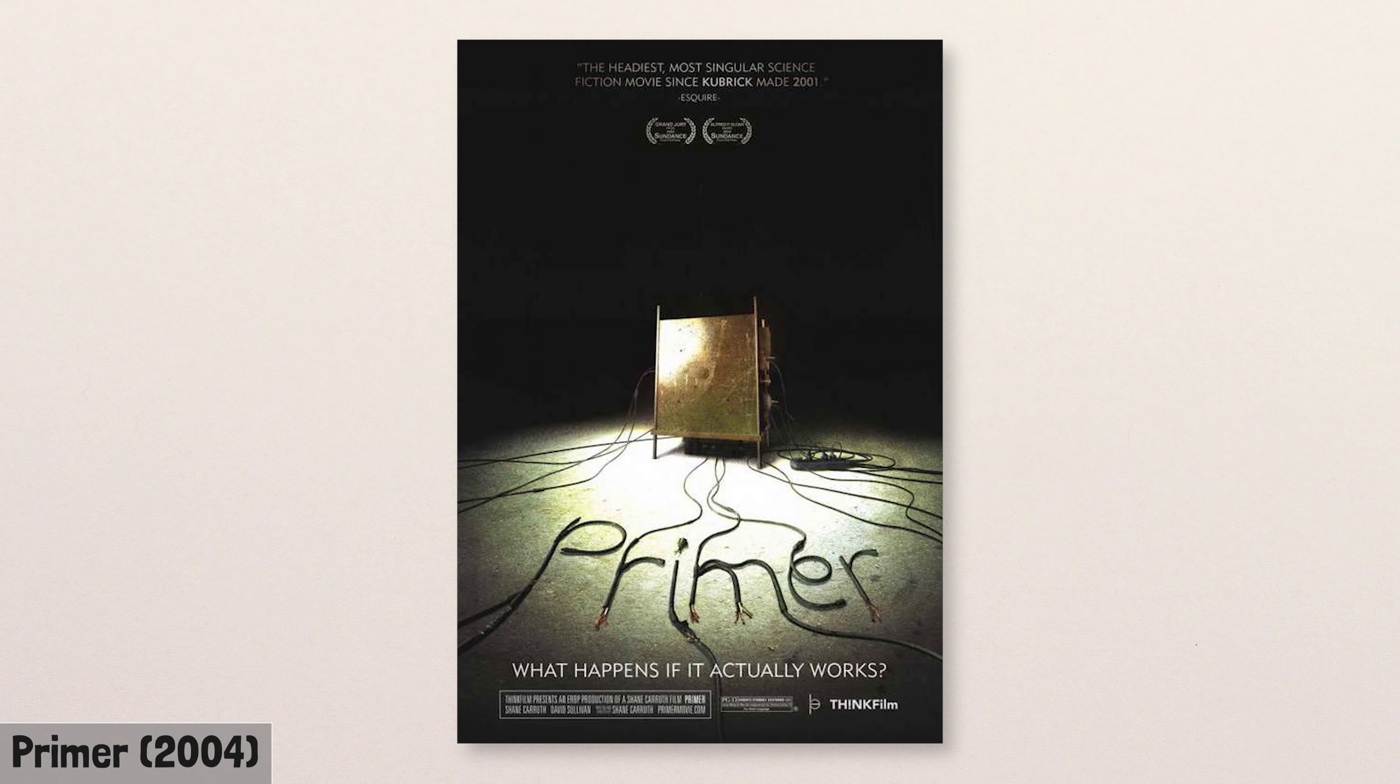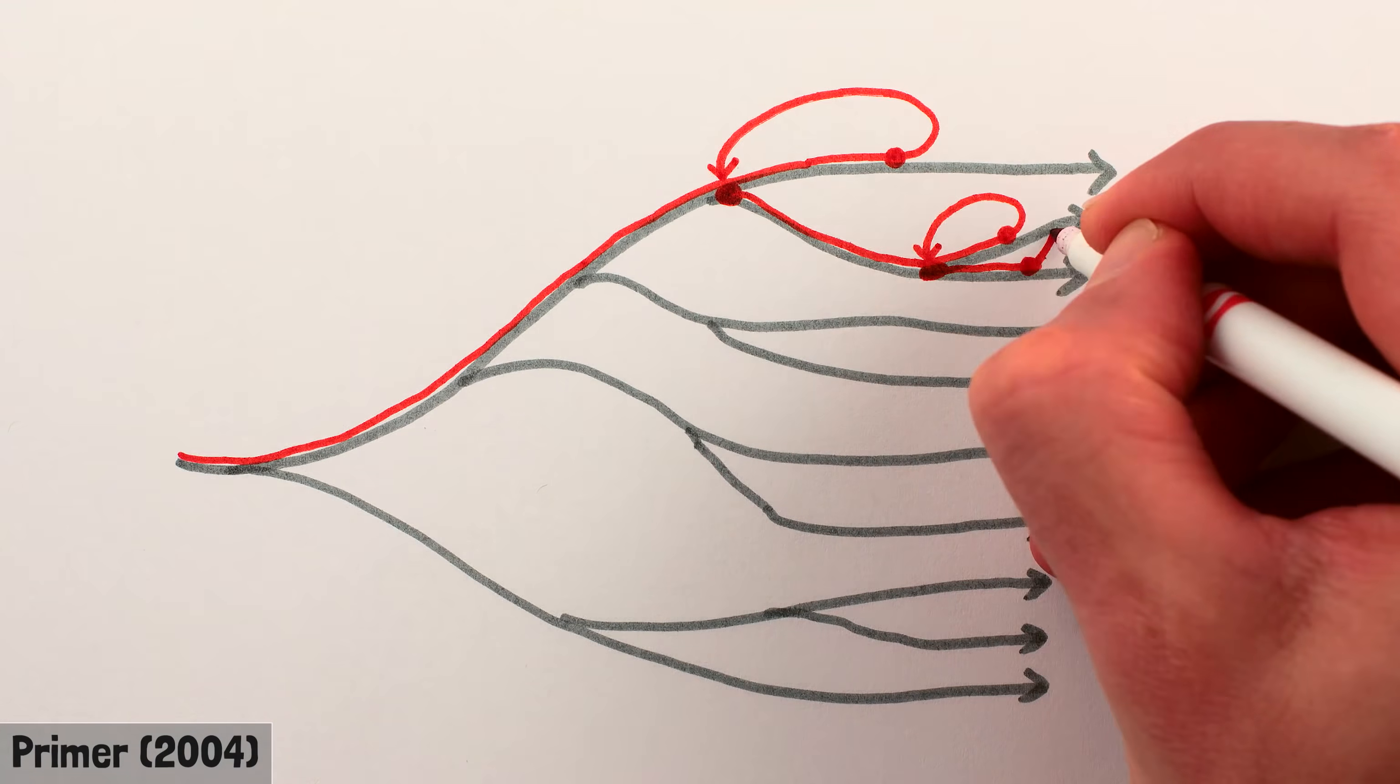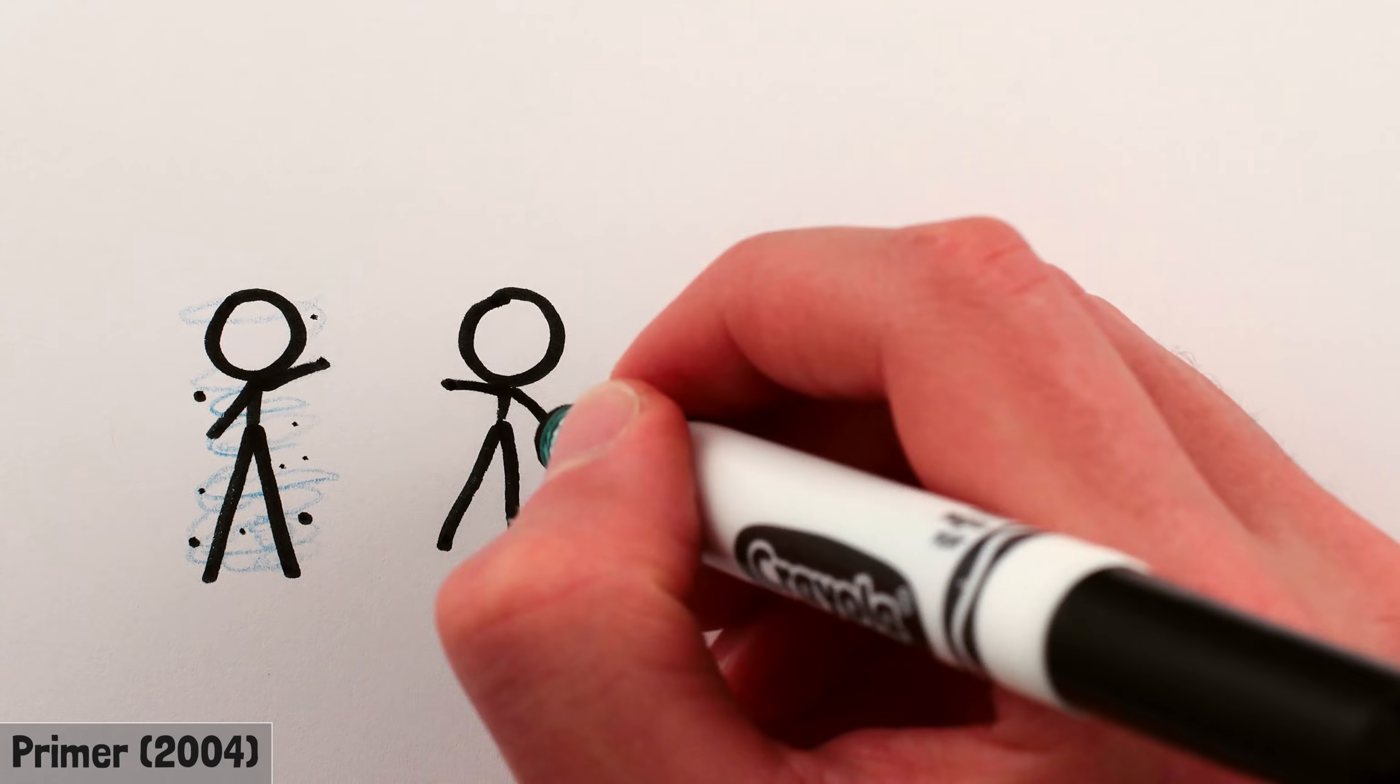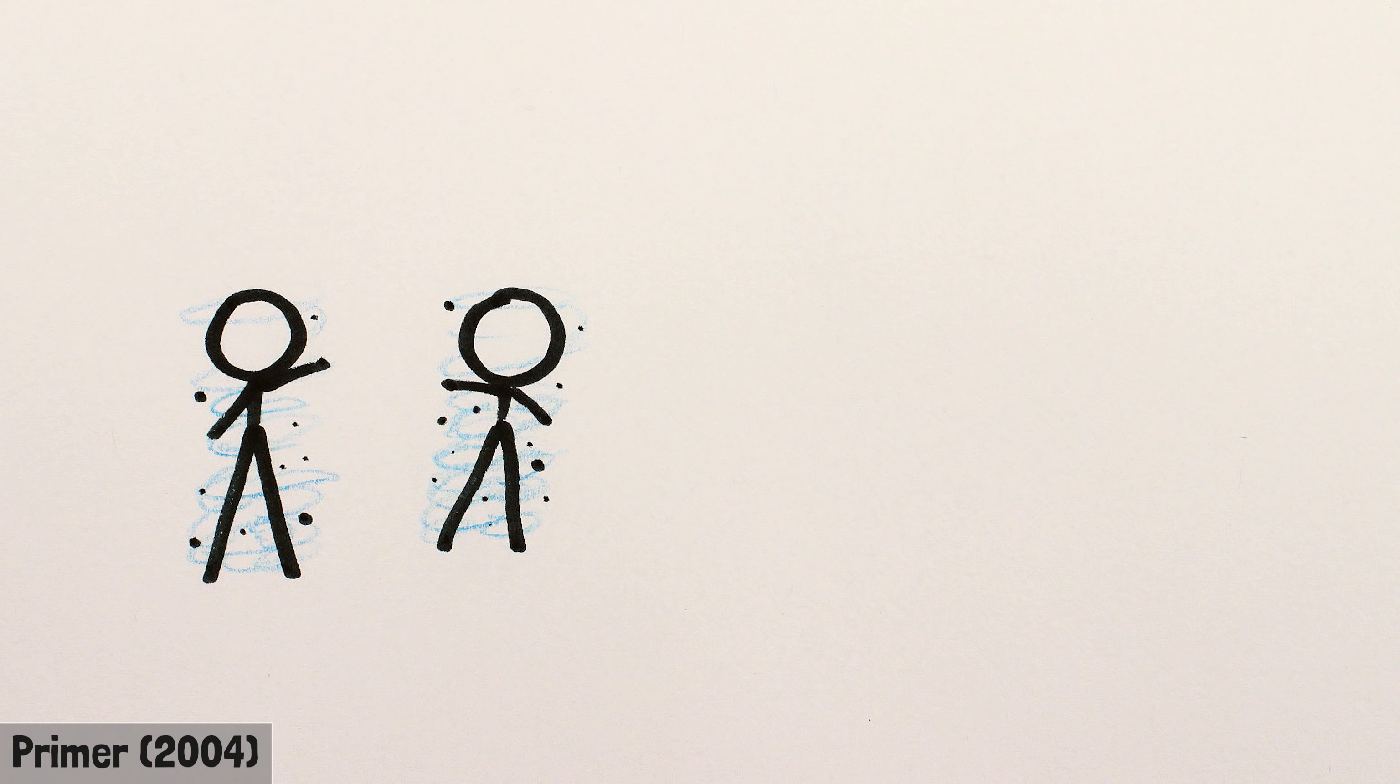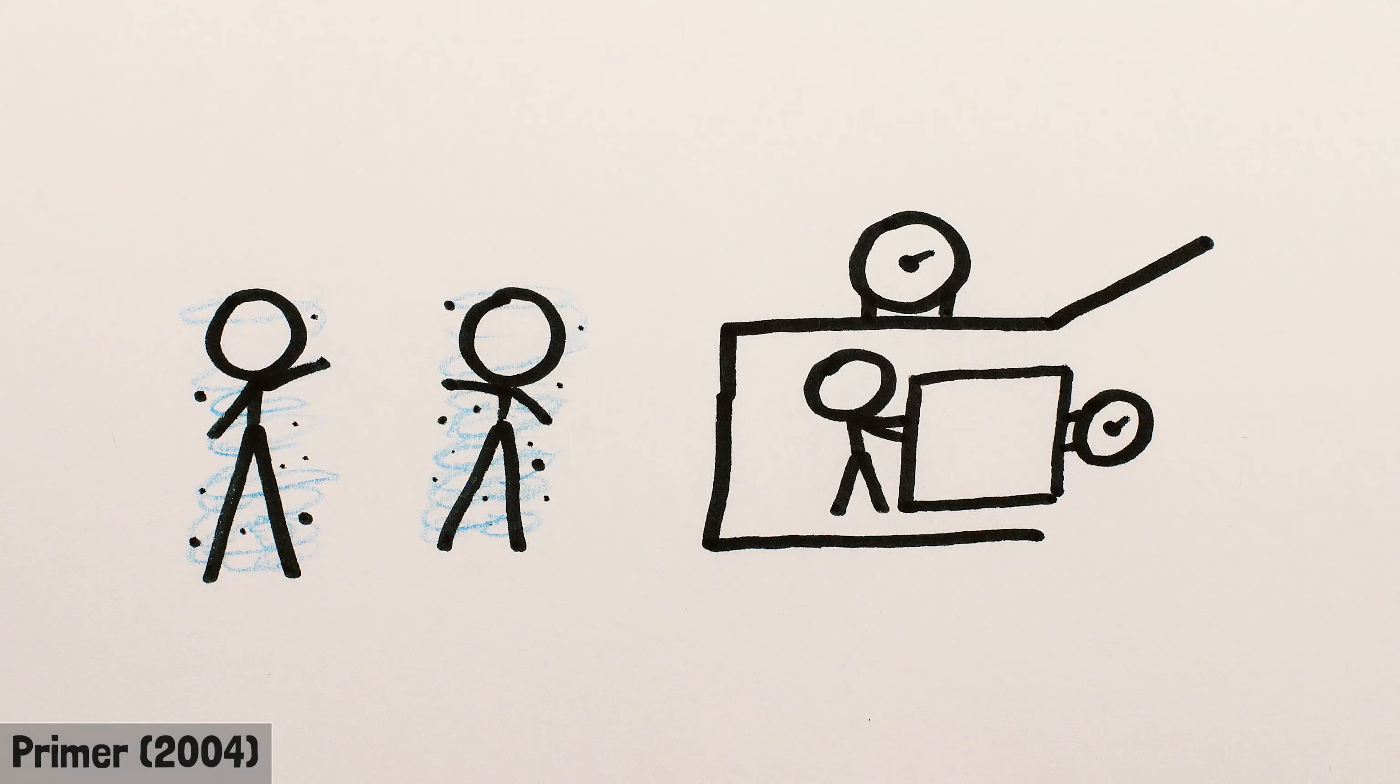The indie film Primer is in the same vein, except that it takes the plot device of time travel to the extreme, with time travel within time travel within time travel, with time travelling characters interacting with other time travelling versions of themselves, bringing time machines with them to the past inside other time machines, and so on.